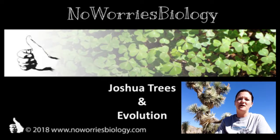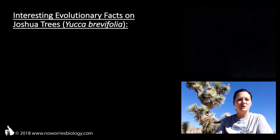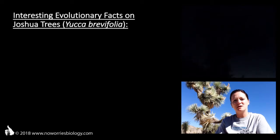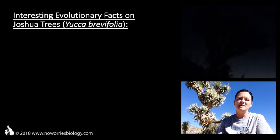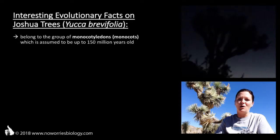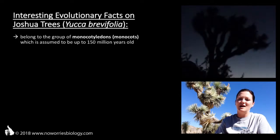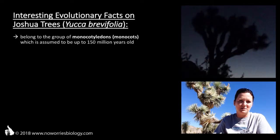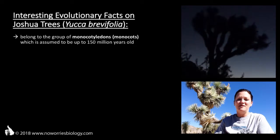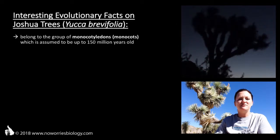Joshua trees, or Yucca brevifolia as they are scientifically known, are native to the deserts of the southwestern US. They are monocotyledons, or monocots, meaning their seedlings only possess one embryonic leaf called a cotyledon. Lilies, tulips, orchids, and grasses are other examples of monocotyledons. The monocots are a major group of the flowering plants and are believed to be up to 150 million years old.